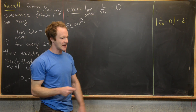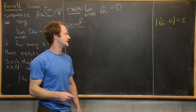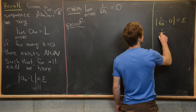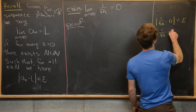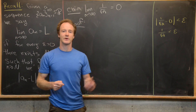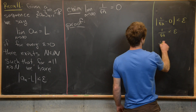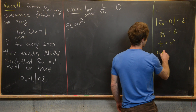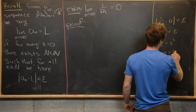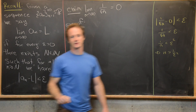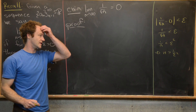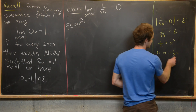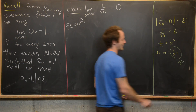Our scratch work starts with the absolute value of 1 over the square root of n minus zero being less than epsilon. The zero isn't doing anything, and the absolute value isn't either because root n is always positive. So that's the same as 1 over root n less than epsilon. Squaring both sides gives 1 over n less than epsilon squared, which is the same as n greater than 1 over epsilon squared. That will be our capital N.